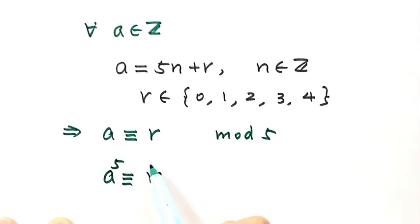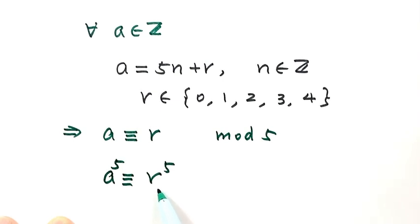So then if both sides are raised to the power 5, they still have the same remainder. So then it's pretty easy to check r to the power 5 and r, they have the same remainder when divided by 5.